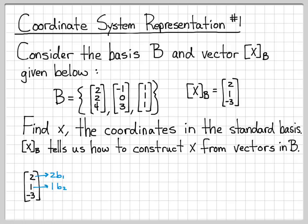And this first coordinate tells us to move 2 units in that direction. The second coordinate tells us to move 1 unit in the b2 direction, where b2 is this second column. And a negative 3 tells us to move 3 units in the negative direction of b3, where b3 is this third column of the basis B.